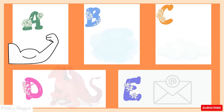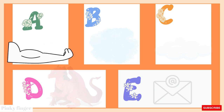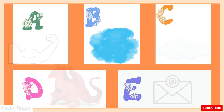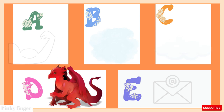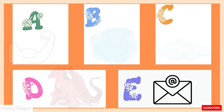A is for Arm. Arm. B is for Blue. Blue. C is for Cloud. Cloud. D is for Dragon. Dragon. E is for Email. Email.